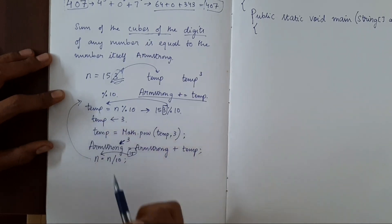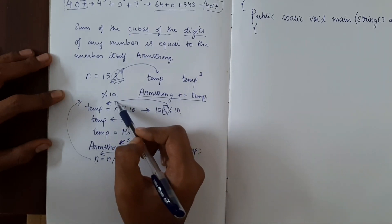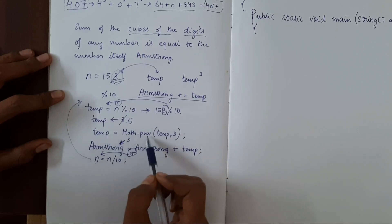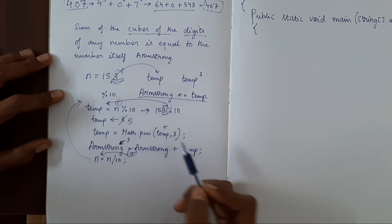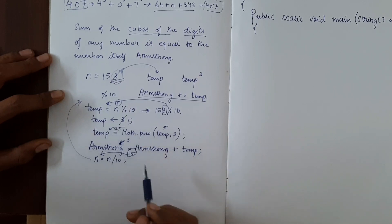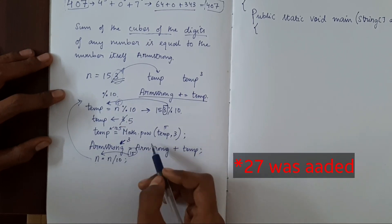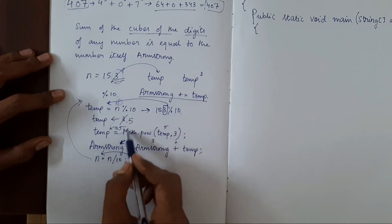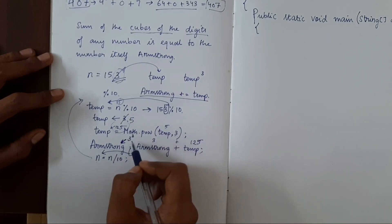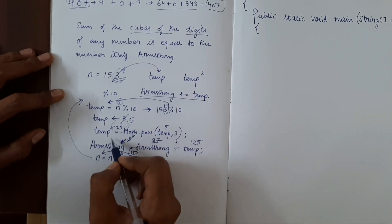Now if you do this step again in a while loop, temp equal to n mod 10. n is 15. So 15 mod 10 will give 5. So temp will become 5. Math dot power of temp, that is 5 power 3, will give 125. Now temp will have 125. In this line, in Armstrong, 3 cube was added, that is 27. So it will become 27 plus 125, that will give 152.